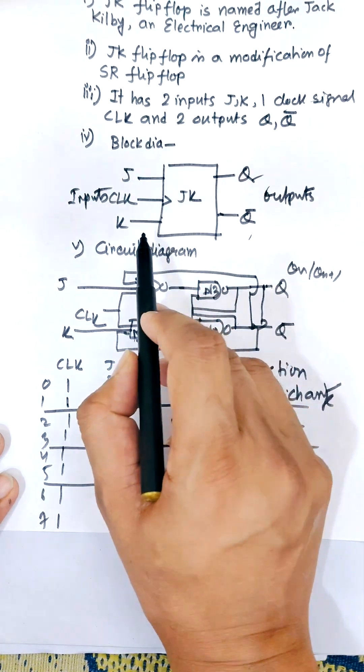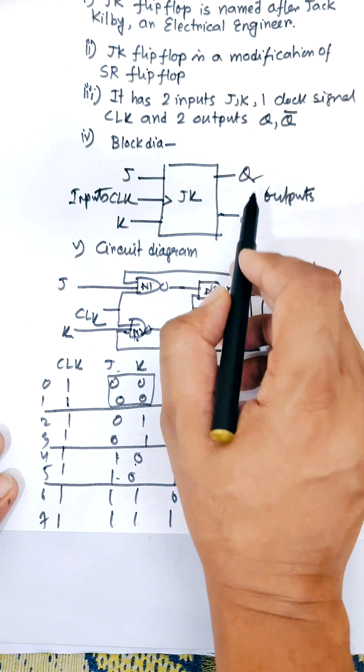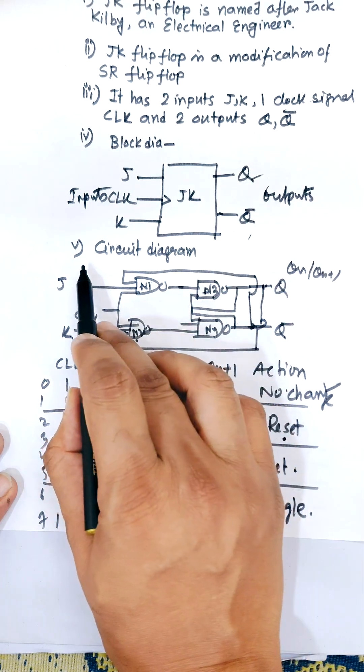J, CLK, and K inputs, and two outputs Q and Q-bar. So that is our key diagram.